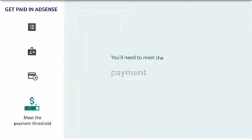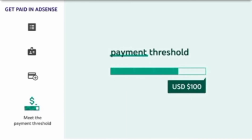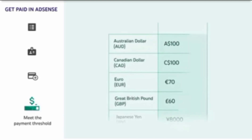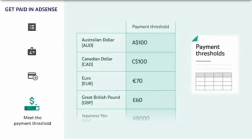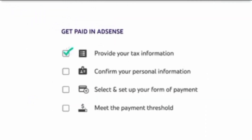And finally, you'll need to meet the Payment Threshold to receive payment. The Payment Threshold is the amount your account balance has to reach before you can get paid. This is 100 US dollars for people in the US, but the amounts vary depending on your location and currency. To see what your Payment Threshold is, check out the Help Center article linked in the description. To recap, there are four steps to getting paid: providing your tax information, confirming your personal information, selecting and setting up your form of payment, and meeting the payment threshold. Note that these steps can take some time to complete. If you ever want to check your progress in the payment setup process, you can always check the Monetization tab in YouTube Studio.